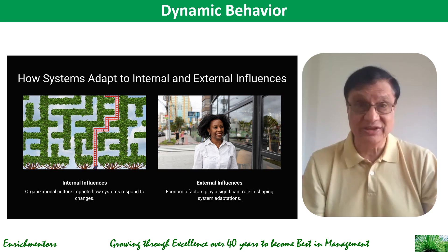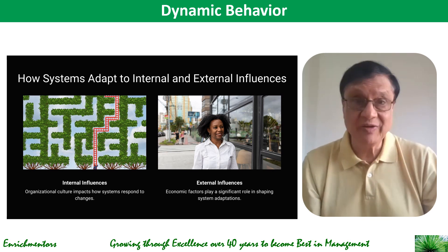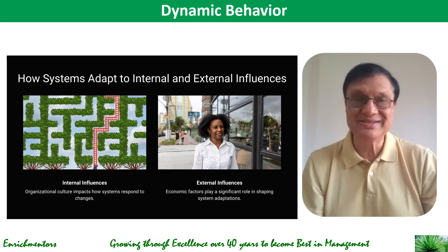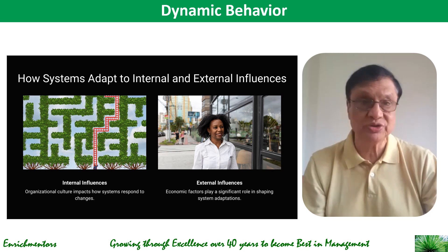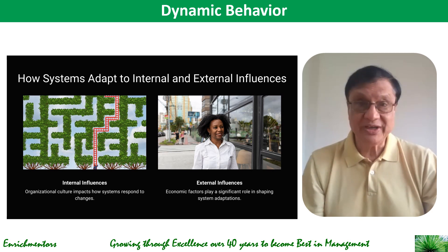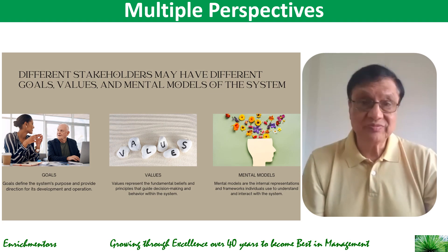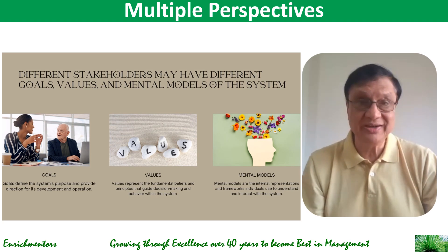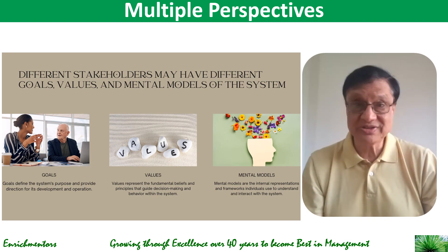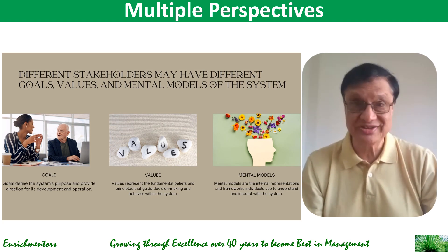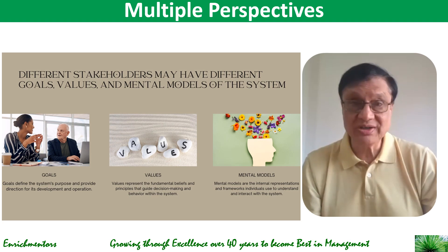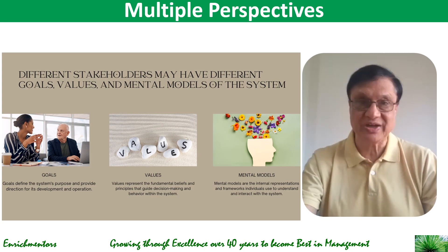The fifth aspect is dynamic behavior. Systems are dynamic and they evolve over a period of time — they are not static. Systems thinking involves analyzing how a system changes and adapts in response to internal and external influences such as feedback loops, external disturbances, or policy interventions. The sixth and final aspect is that systems thinking encourages considering multiple perspectives. The same thing can be seen from different views, and systems have multiple stakeholders. Different stakeholders may have different goals, values, or mental models of how the system works, which influences how they perceive and interact with it.